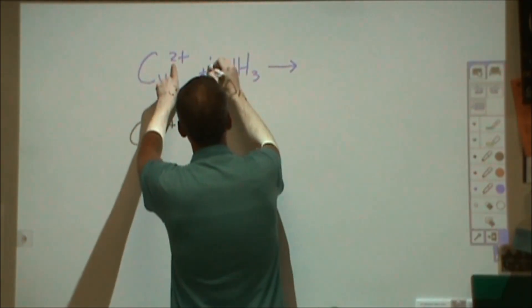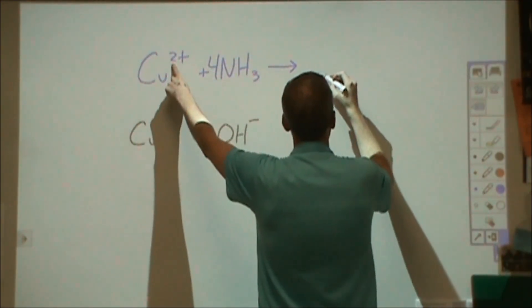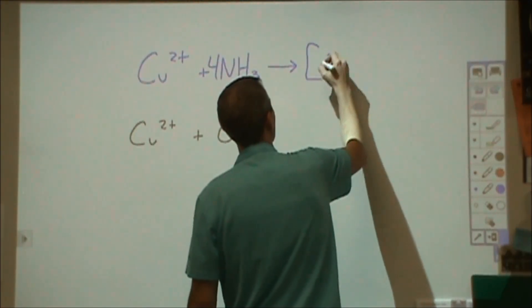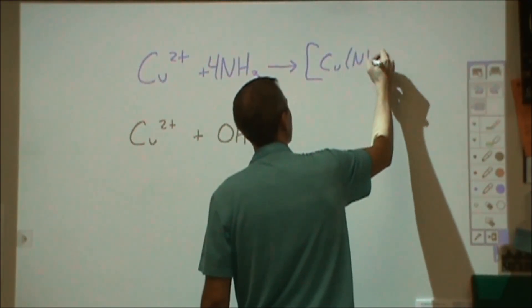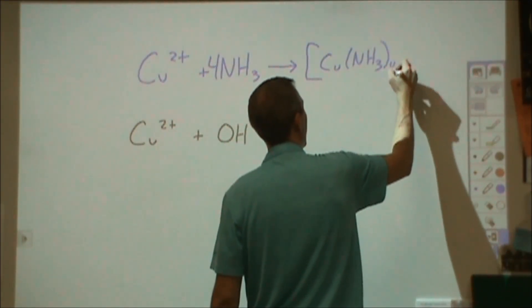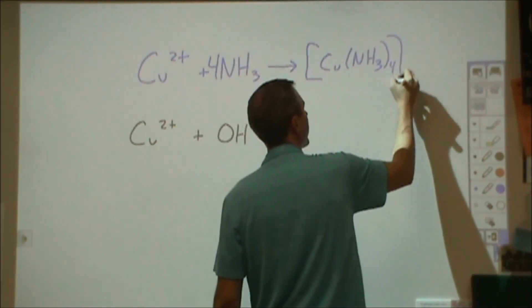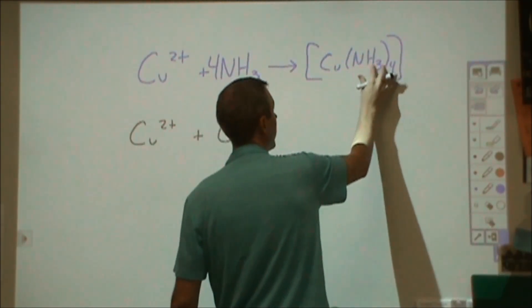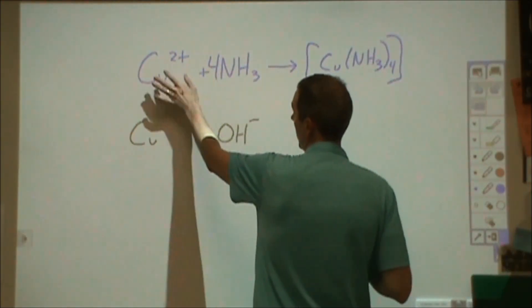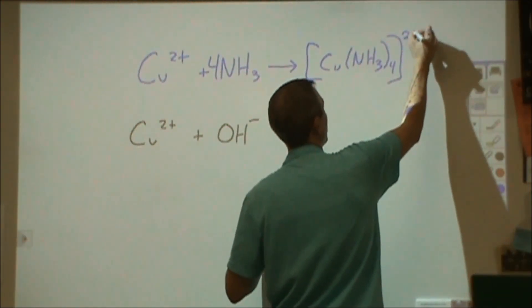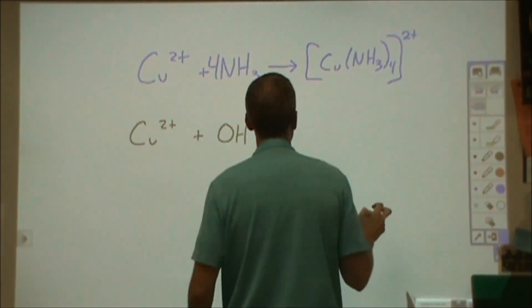In this case, we're going to take four ammonias, since we have a two-plus charge, so we're going to take double the charge, and we're going to put those four ligands around the copper ion to form a complex ion. Now the total charge of this is the charge of this and the charge of these. These are neutral, and this is two-plus, so the total is a two-plus charge applied to the entire ion.